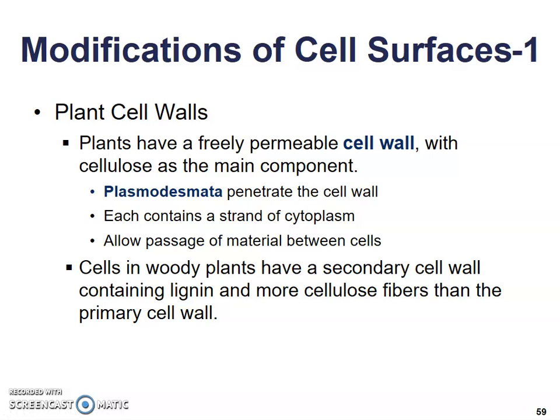Plant cell walls: plants have a freely permeable cell wall with cellulose as the main component. Plasmodesmata penetrate the cell wall, and each contains a strand of cytoplasm which allows the passage of materials between cells. Cells in woody plants have a secondary cell wall containing lignin and more cellulose fibers than the primary cell wall, making them a bit more sturdy.